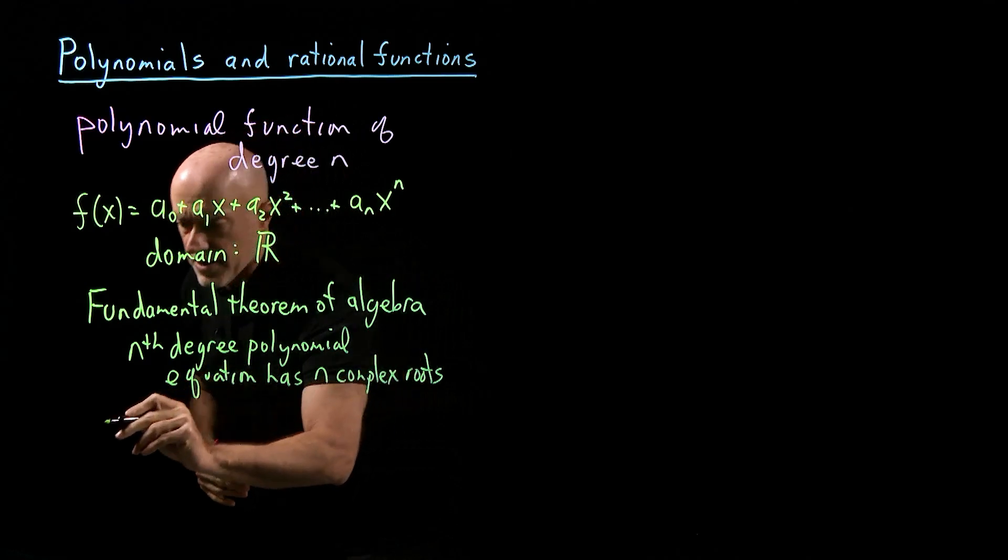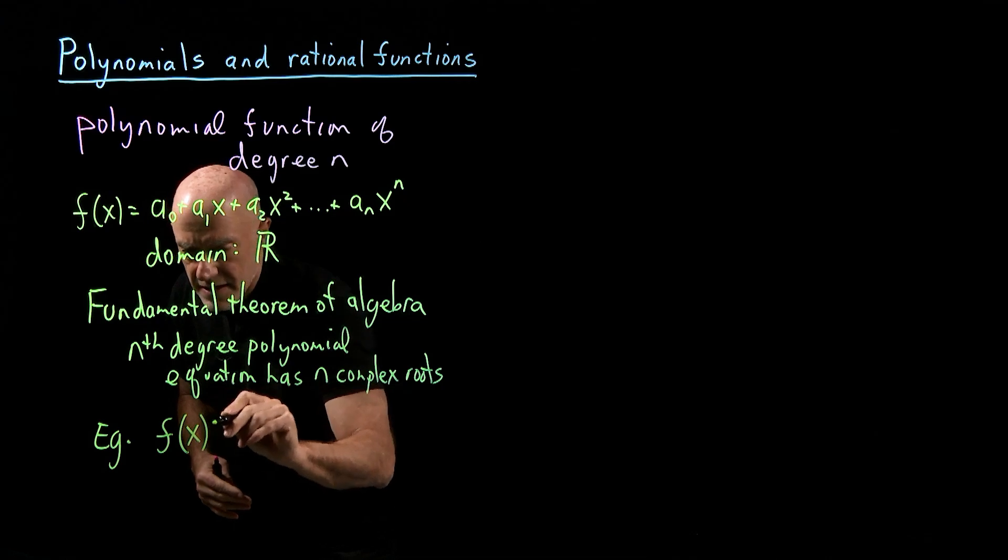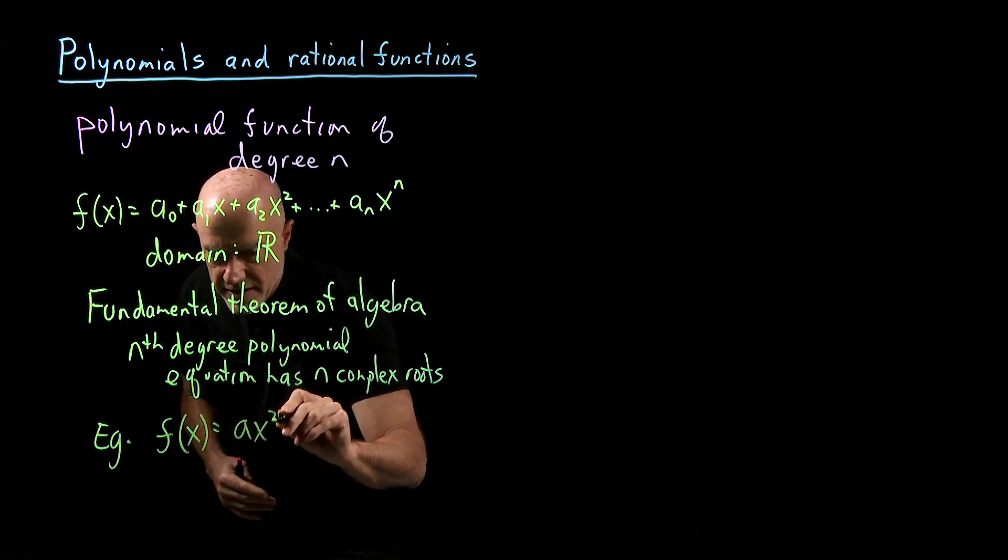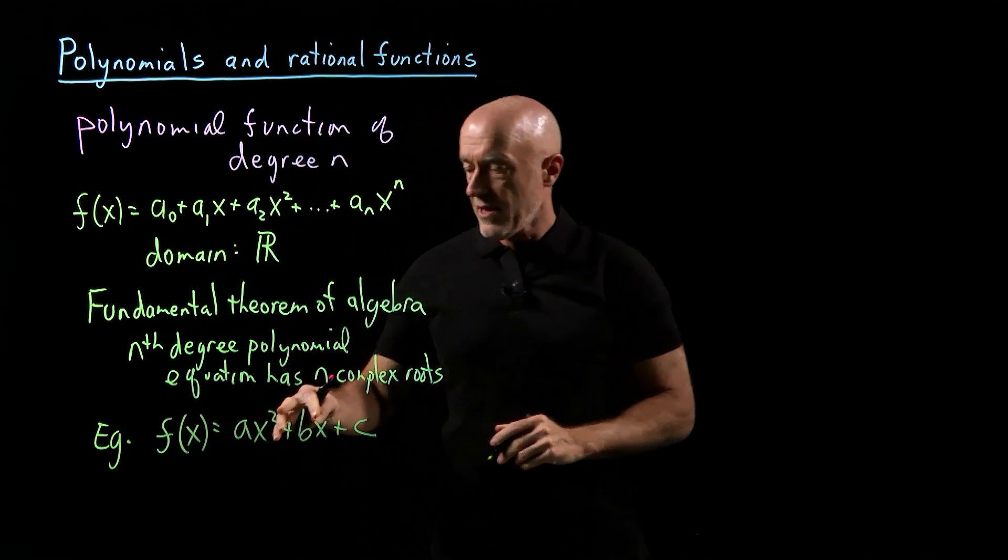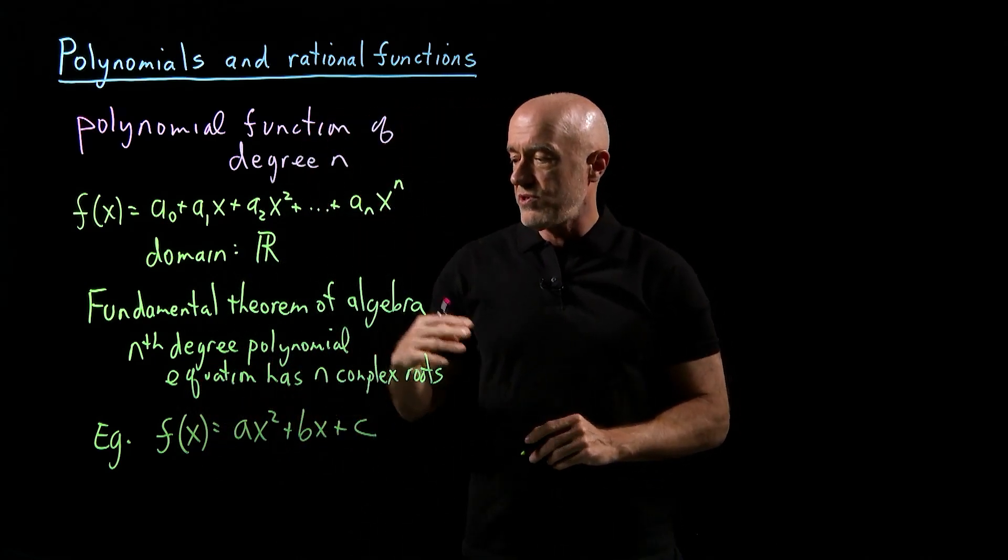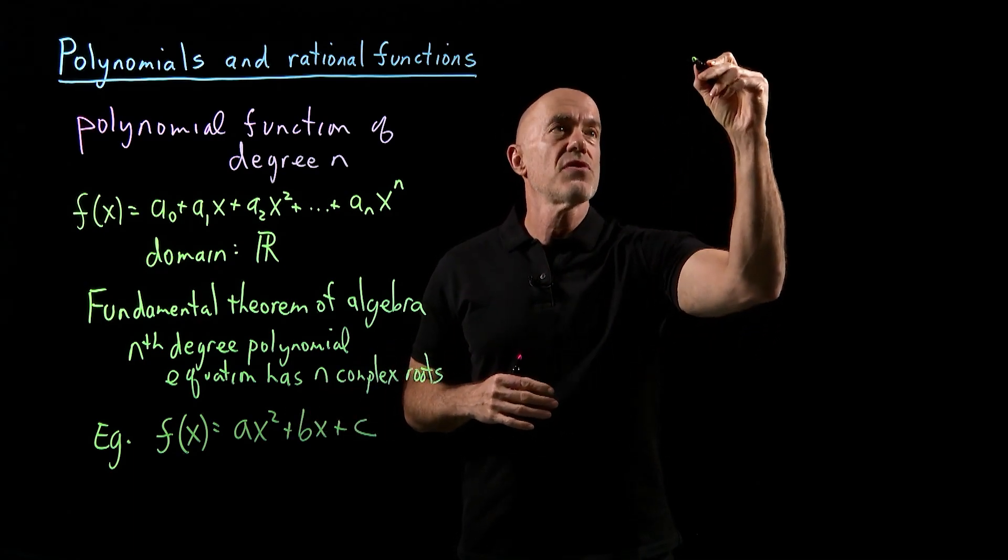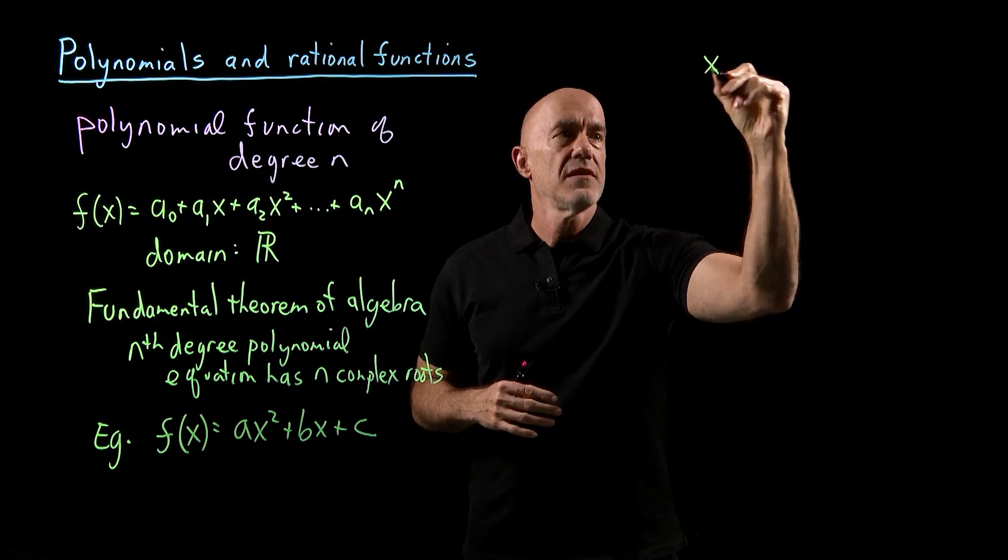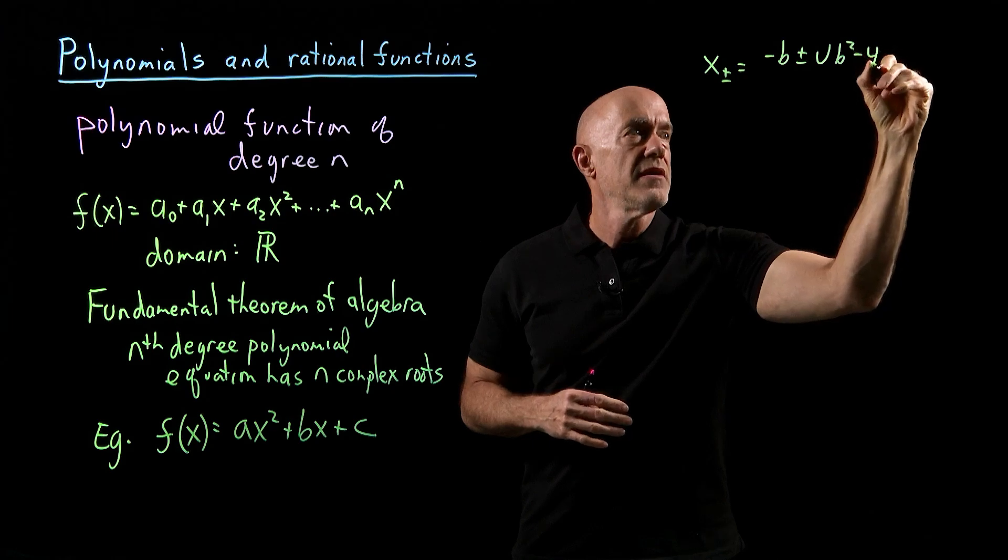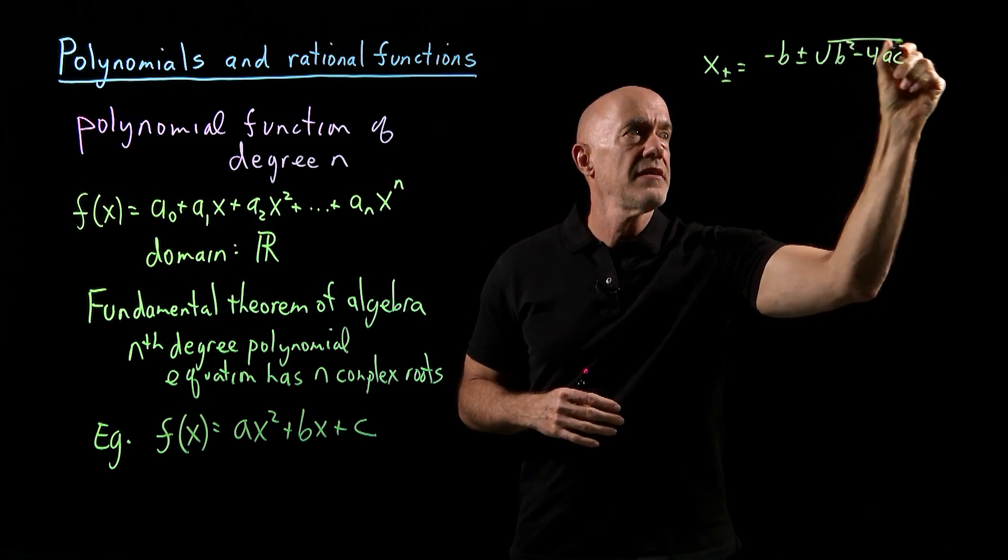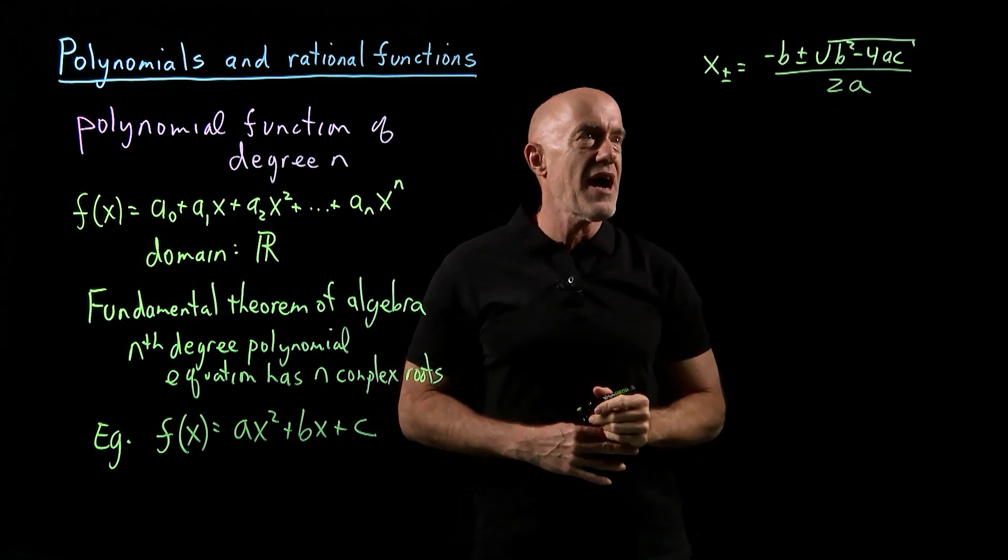The example I want to look at is the quadratic equation. f(x) equals ax² plus bx plus c. That's the quadratic polynomial. What are the roots of the quadratic polynomial? Well, that's given by the quadratic formula. We know that the roots are x equals negative b plus or minus the square root of b² minus 4ac divided by 2a. Everybody should know this from high school.